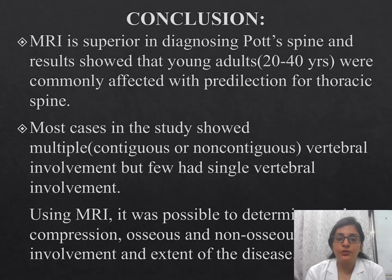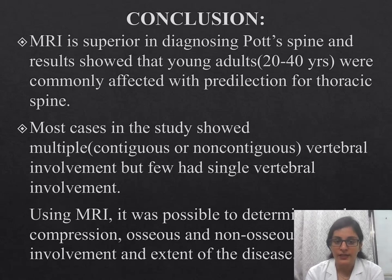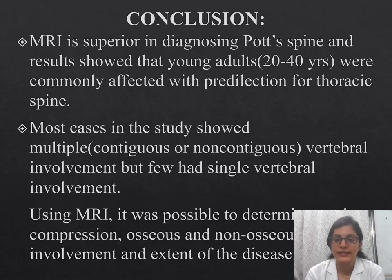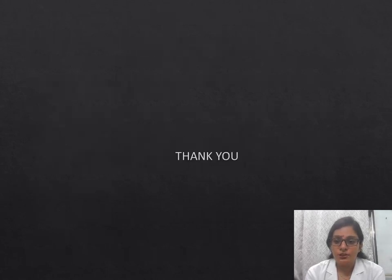In conclusion, MRI is superior in diagnosing Pott's spine. Results showed that young adults aged 20 to 40 years were commonly affected, with predilection for the thoracic spine. Most cases showed multiple vertebral involvement, but single vertebral involvement can also occur. Using MRI, it was possible to determine cord compression, osseous and non-osseous involvement, and the extent of disease. Thank you.